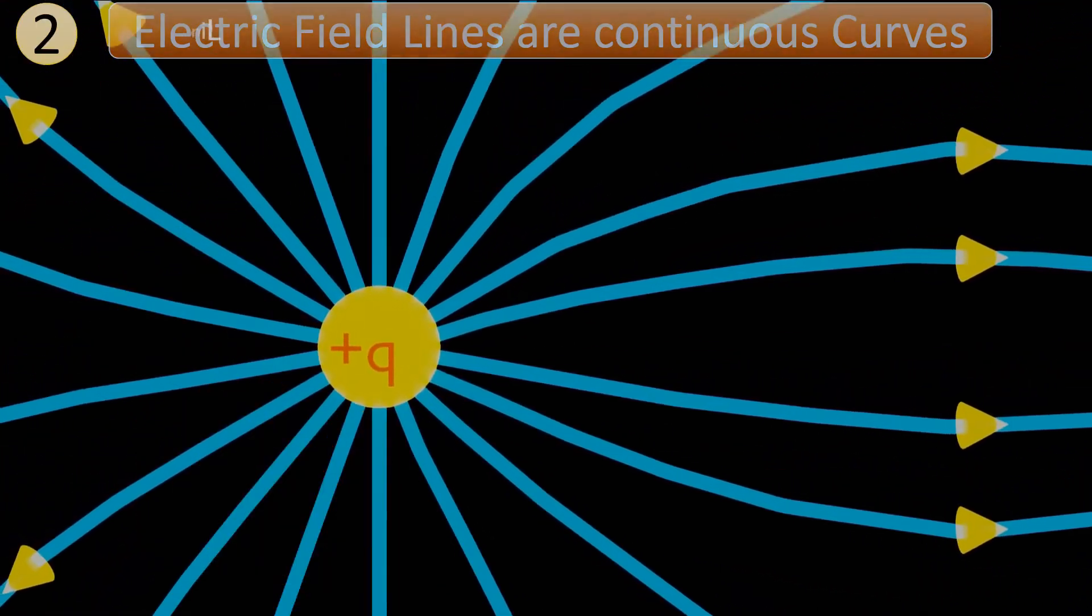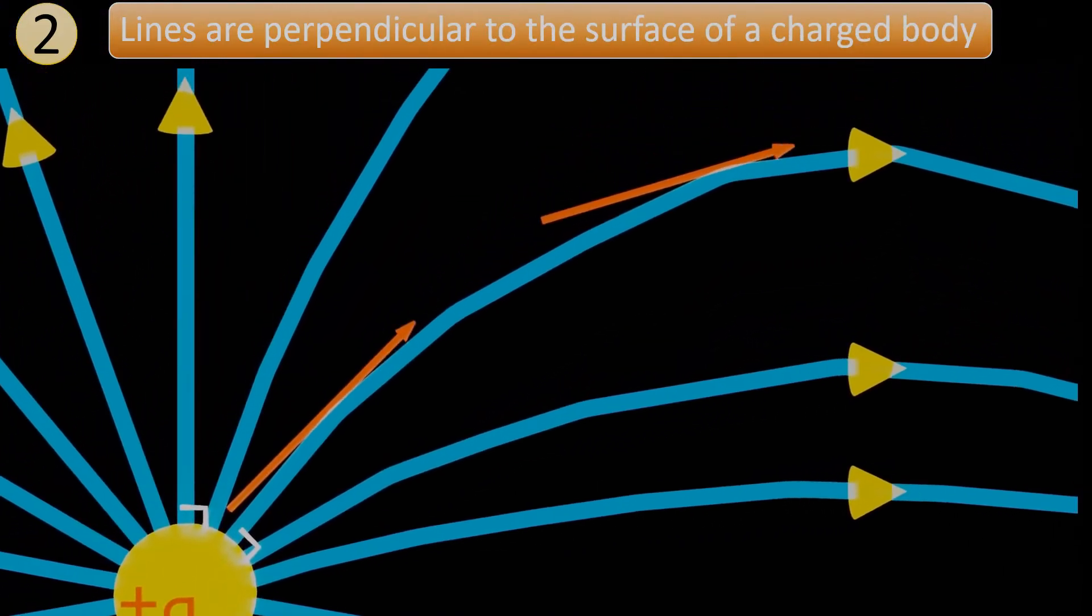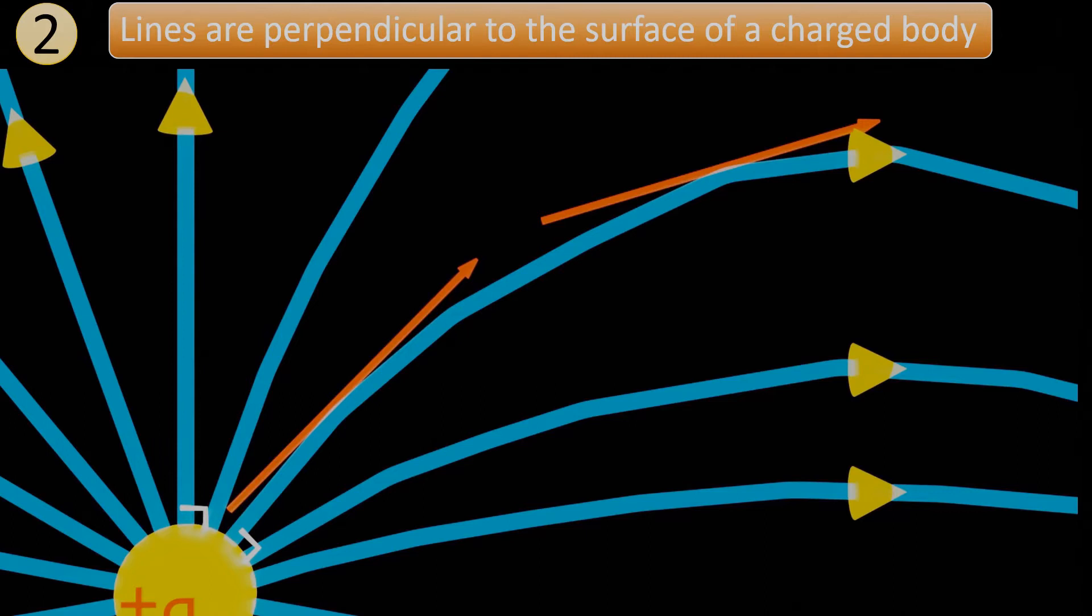Second, the lines are perpendicular to the surface of a charged body. And the tangent drawn at any point on the curve shows the direction of the force and the electric field at that point.